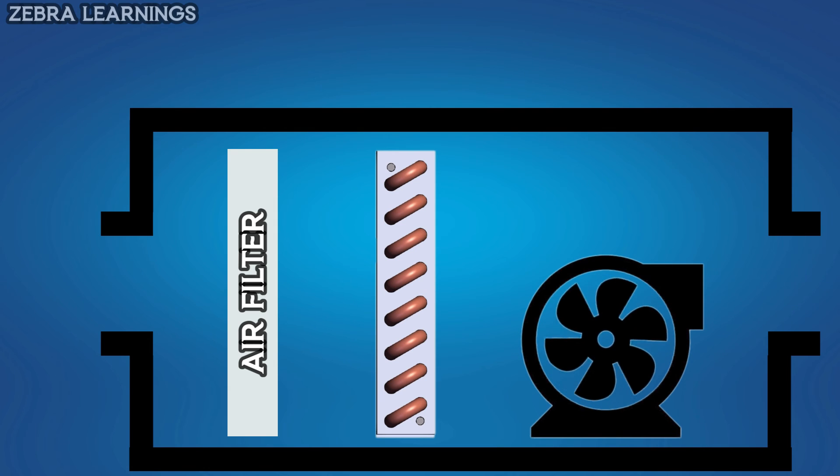The hot air inside the room comes back into the FCU through the return duct. This is the working principle of the fan coil unit.